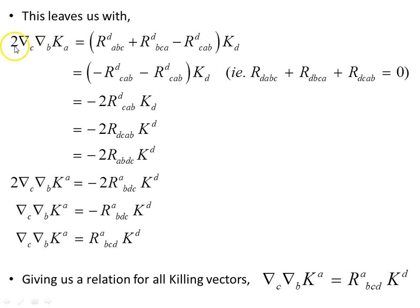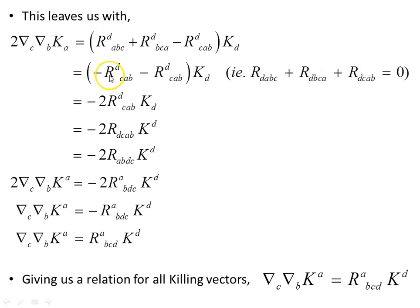So two of these objects equals this object here. One of the symmetry properties of the Riemann tensor comes to our aid: the first two terms can be made to disappear because their sum equals the negative of another term, so we can replace them. We're left with two lots of this object times the Killing vector. Next, we lower the d index on the Riemann tensor and raise it on the Killing vector simultaneously.